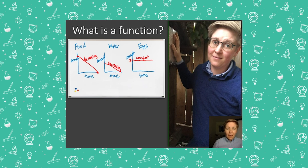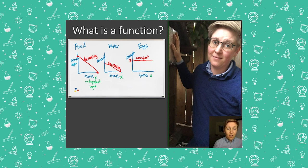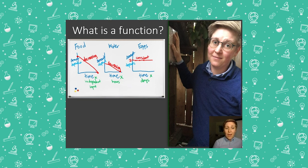In all of my graphs, time is the x-axis — that is called the independent variable, also known as the input to a function. We also have a dependent variable on the y-axis: the amount of food depends on time, the amount of water depends on time, and the amount of eggs depends on time. So we have three vocabulary words: functions that are decreasing, functions that are increasing, and functions that are constant.